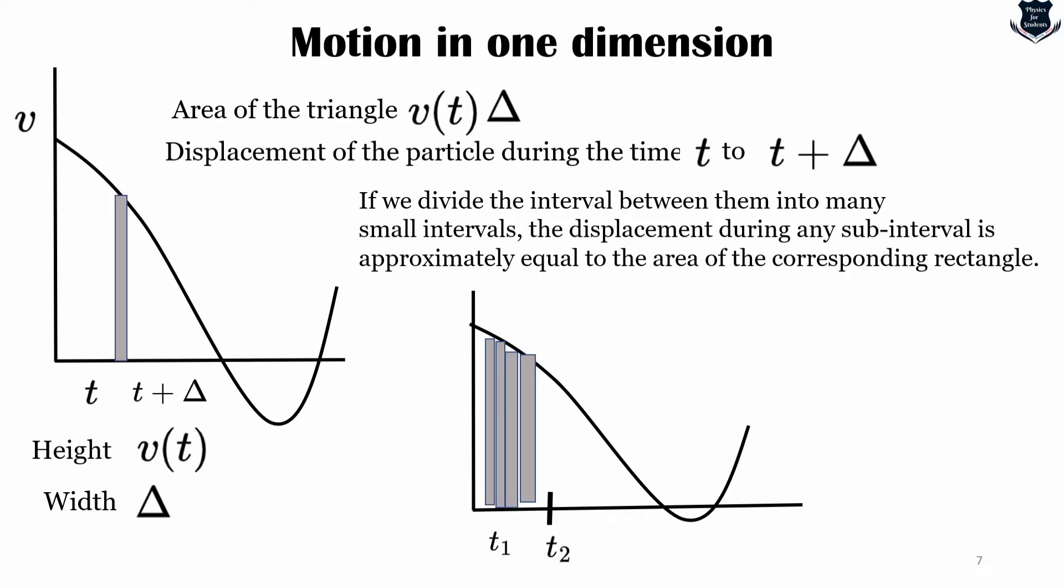We have divided into very small parts, so the net displacement x(t2) minus x(t1) is approximately equal to the sum of the areas of the rectangles, because we have further subdivided into very small parts.